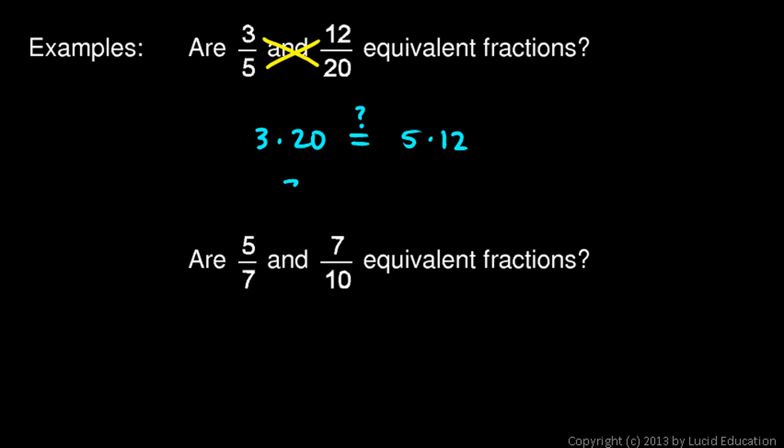Well, three times twenty is sixty. Okay, is that equal to five times twelve? Well, five times twelve is sixty. So, yes, those are equal. So, the answer to the question is yes. Are the two fractions equivalent? Yes, they are.